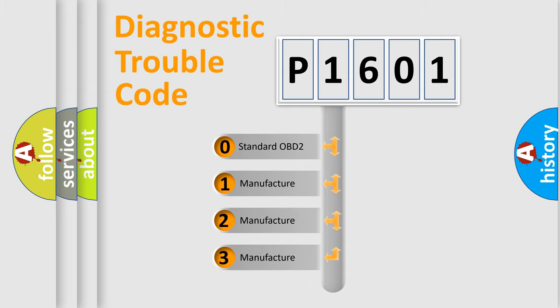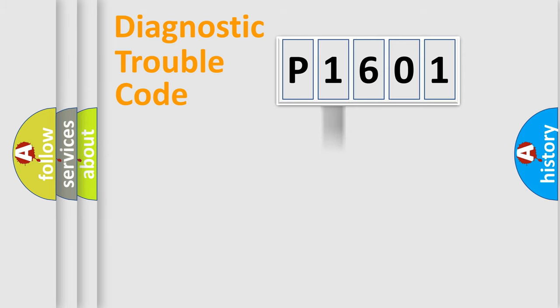If the second character is expressed as zero, it is a standardized error. In the case of numbers 1, 2, or 3, it is a more specific expression of the car-specific error.